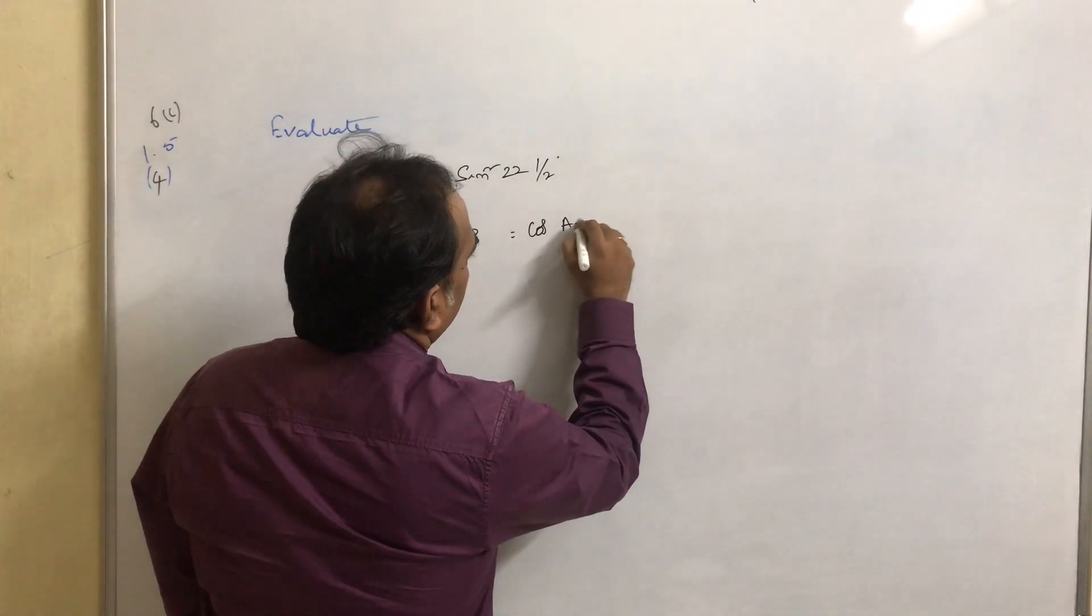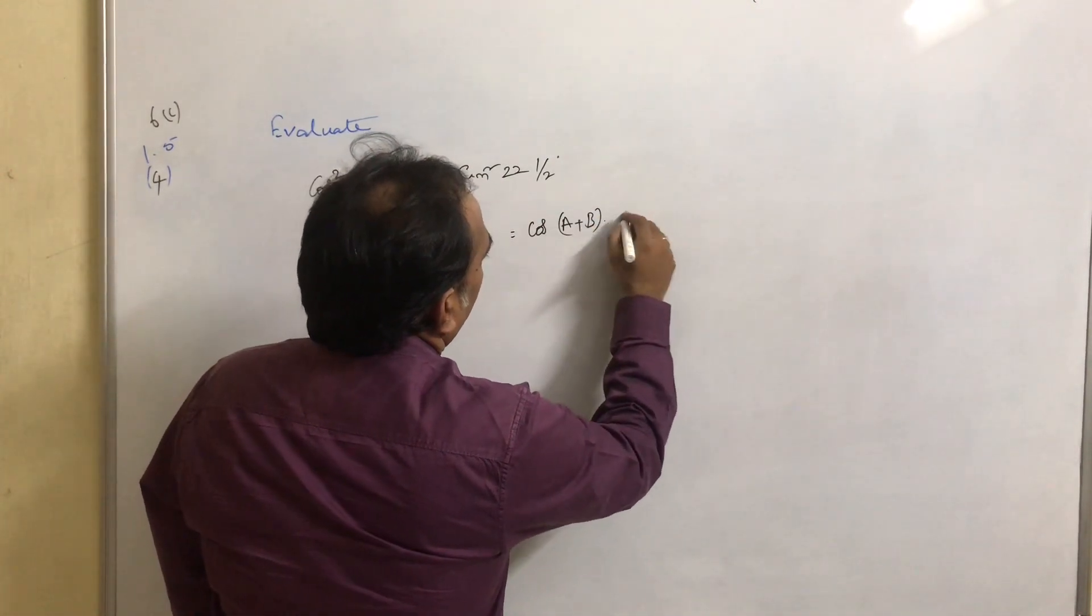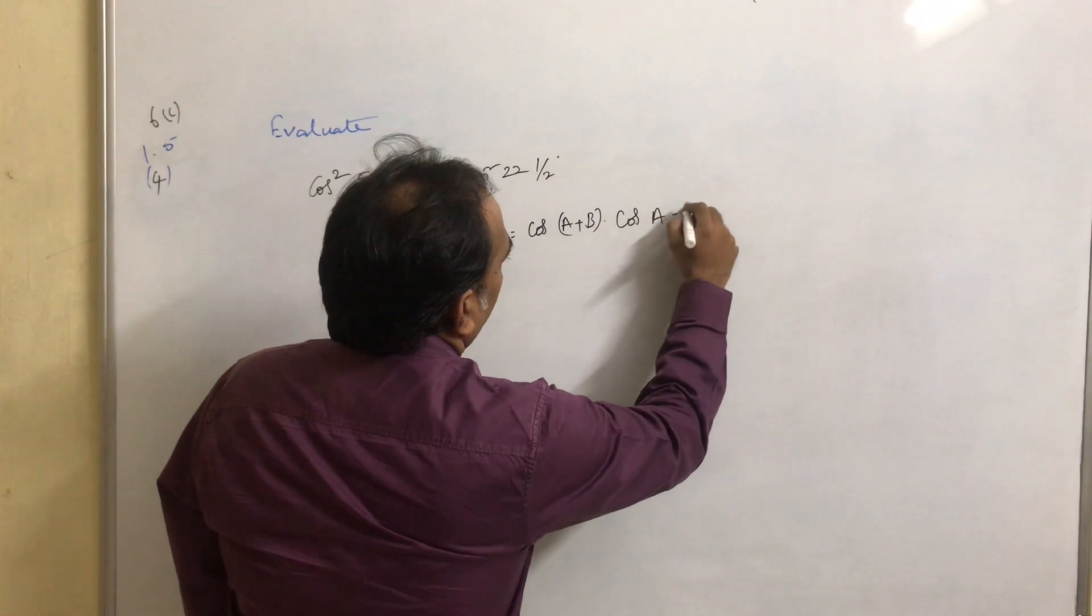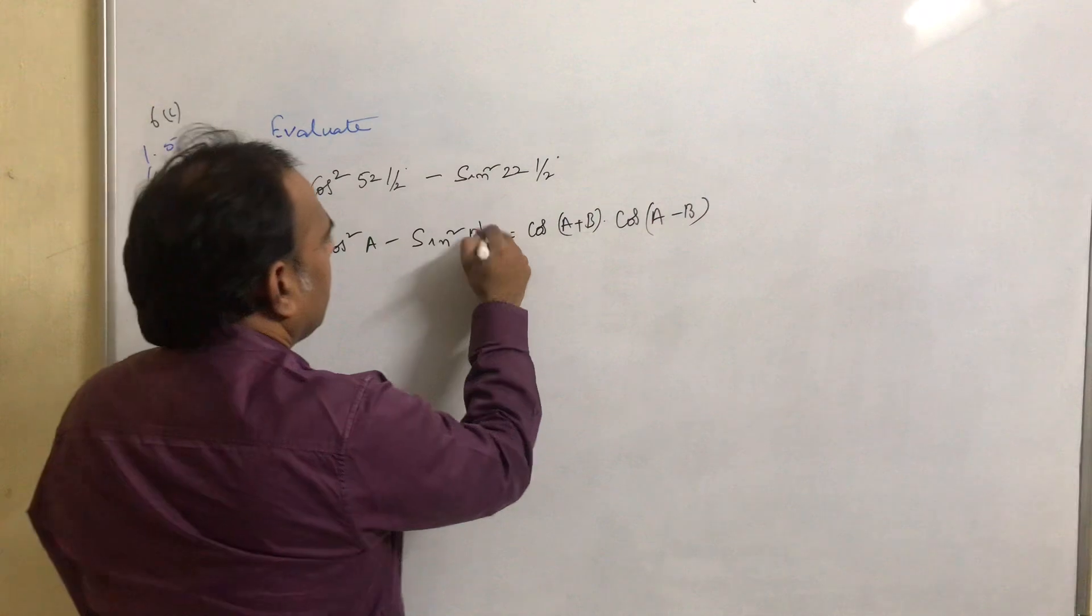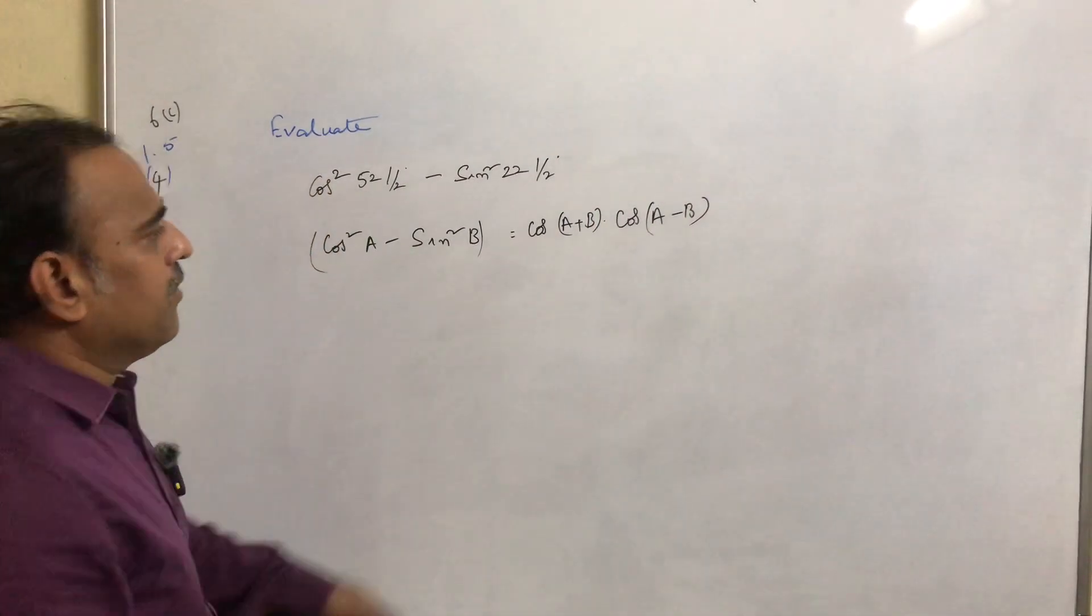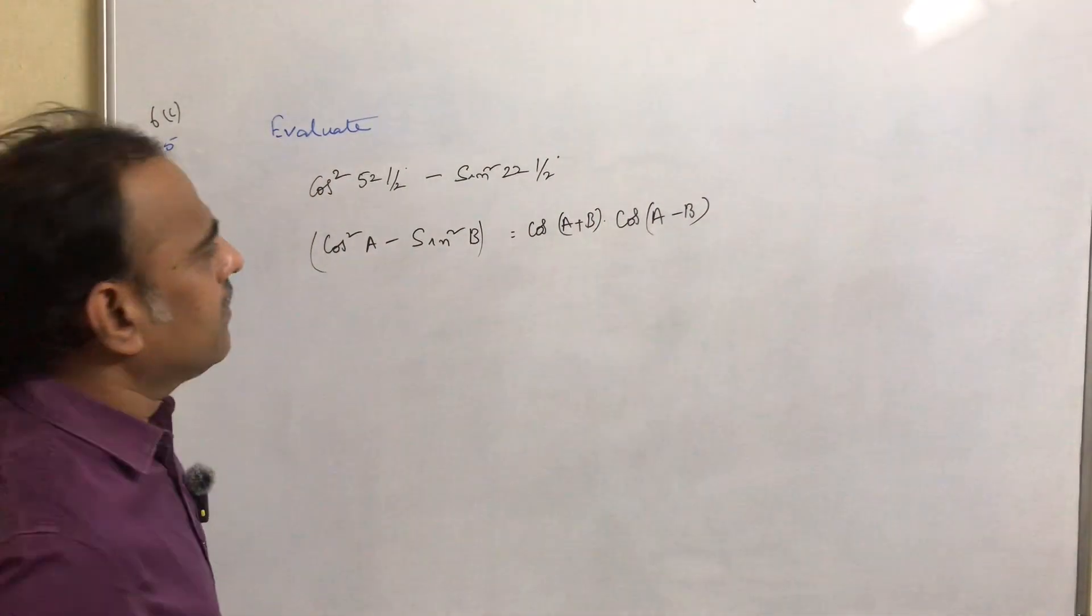Cos(a + b) × cos(a - b). The derivation we have already shown in the previous video. If you want derivation, just refer to the previous videos.